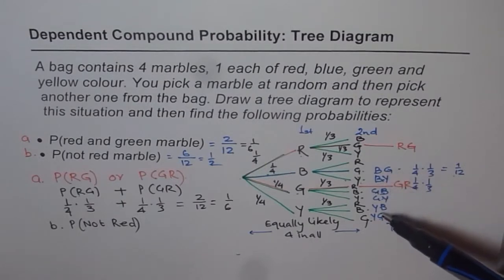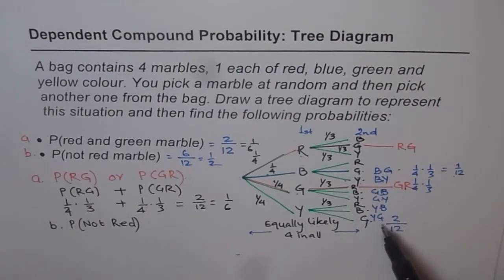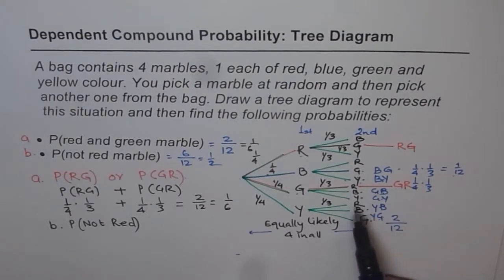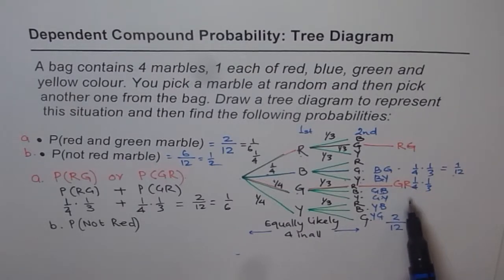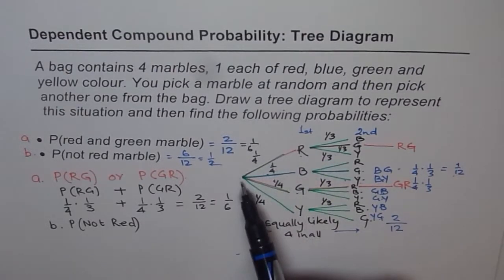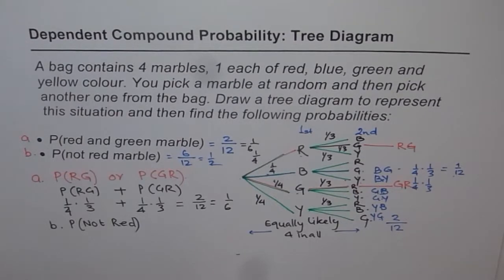We could use the counting method here since outcomes are equally likely, but when cases are not equally likely, we cannot use counting — we must use the multiplication method along the branches of the probability tree. So from now on, we'll follow the principle that probabilities along a branch get multiplied. I hope you understand the topic.